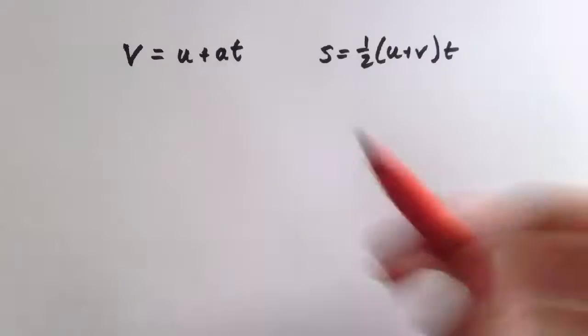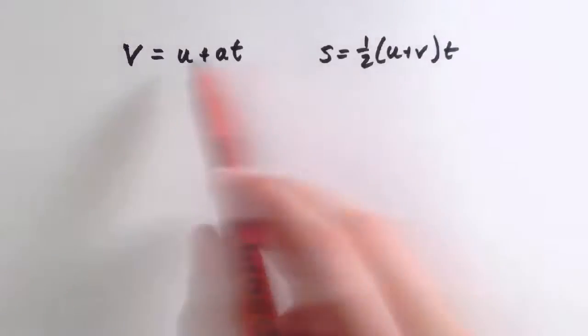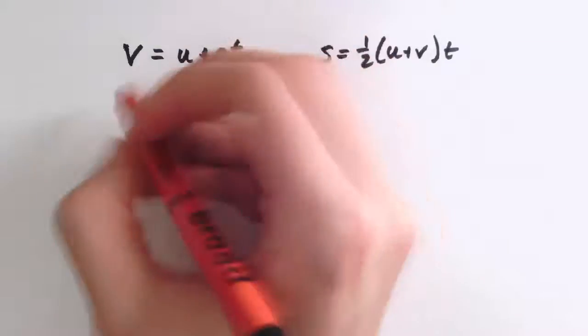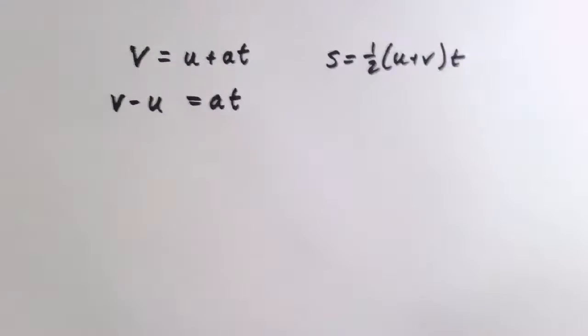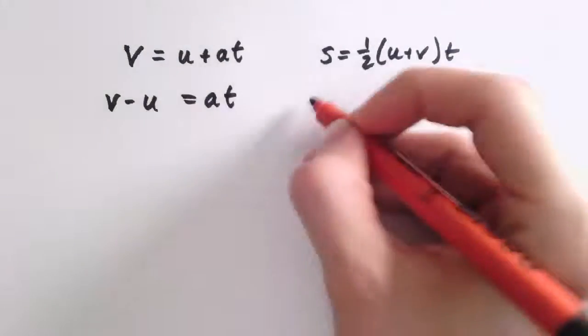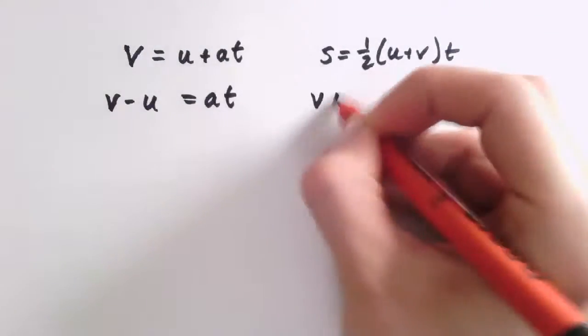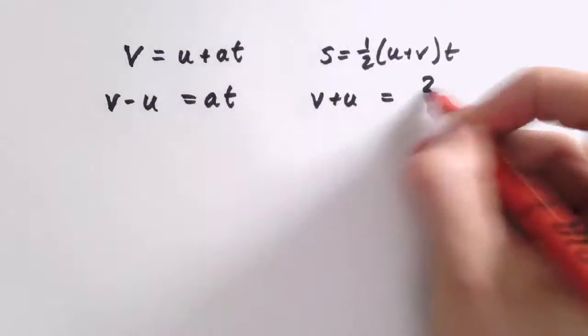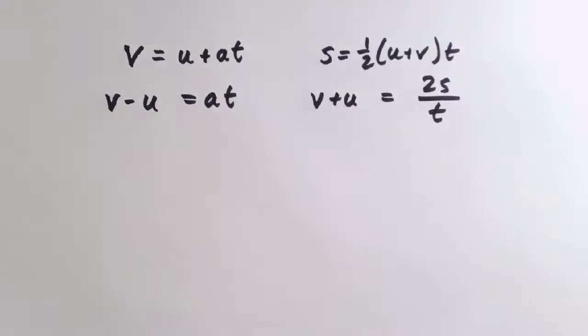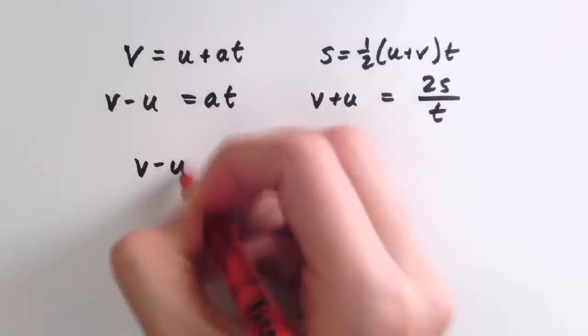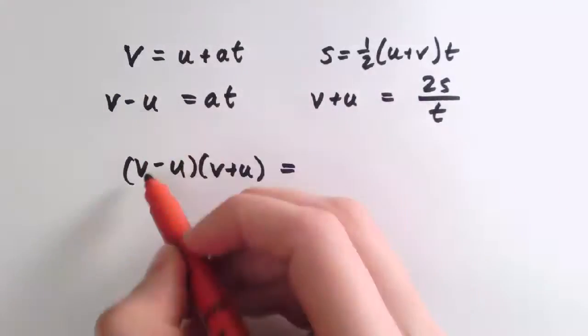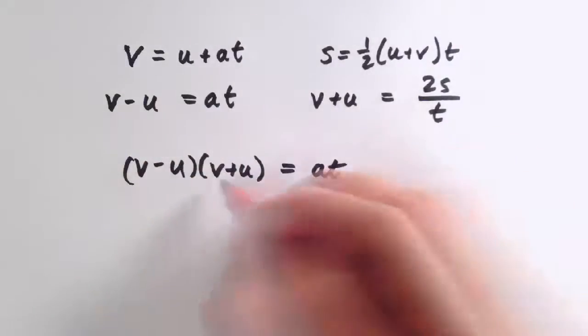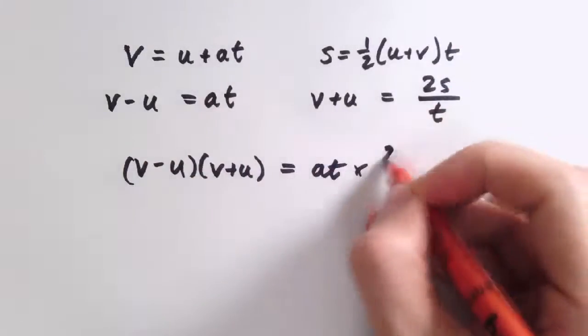To derive the final SUVAT equation, if we just start with those two simplest ones again and rewrite them, we're going to rewrite the one on the left as v minus u equals at, and the one on the right as u plus v, or we're going to write that as v plus u is equal to 2s divided by t. And then if we multiply v minus u by v plus u, well, v minus u is at and v plus u is 2s over t, so we get that.